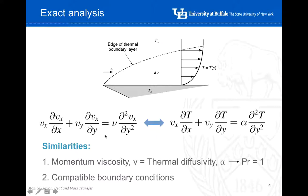The first condition is that the momentum viscosity shall be equal to the thermal diffusivity, so we can apply directly the solutions from the momentum transfer. If you remember from the Prandtl number definition, the Prandtl number is the ratio between the momentum diffusivity and the thermal diffusivity. So if the momentum diffusivity needs to equal the thermal diffusivity alpha, that implies the Prandtl number has to be one.